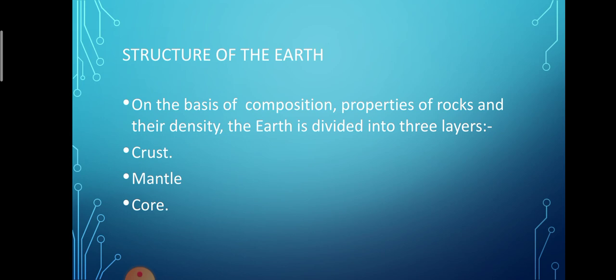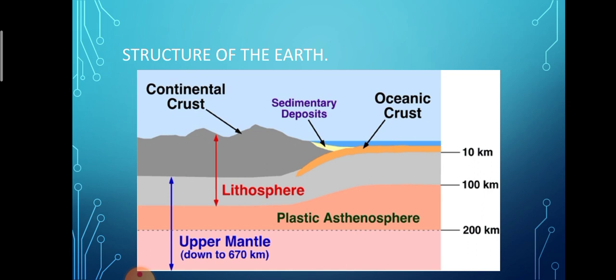First we will study the first layer of the earth, that is crust. The crust is also known as the lithosphere. It is the solid outermost layer of the earth. It is composed of rocks and minerals, and its average thickness varies between 8 km to 50 km.